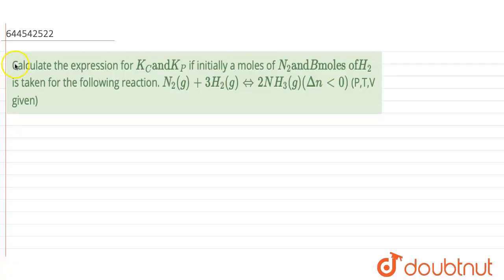Hello everyone, so in this question it is given that we need to calculate the expression for Kc and Kp if initially A moles of nitrogen and B moles of hydrogen is taken for the following reaction. The reaction is N2 plus 3H2 gives 2 moles of NH3, given that delta N is less than 0.